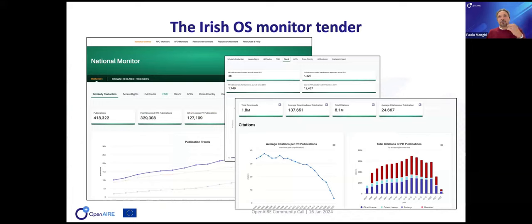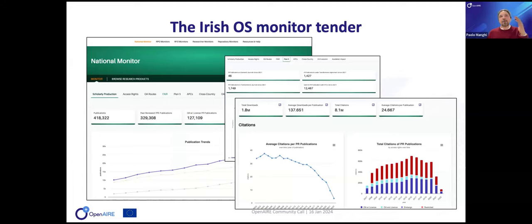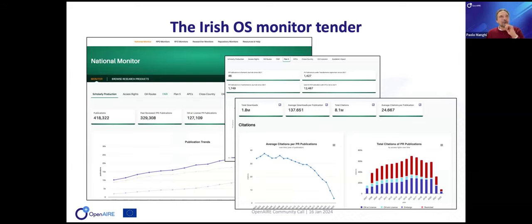These are screenshots of what the Irish Open Science Monitor provides — from open access routes, FAIR, Plan S, APCs, cross-country collaborations, number of citations — and you can dig in by university or by repository. You can see at the top RPO monitors, RFO monitors — funders from Ireland are also focused. So it's a single entry point for information about national monitoring.